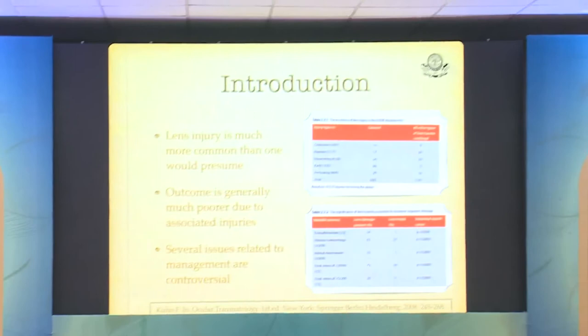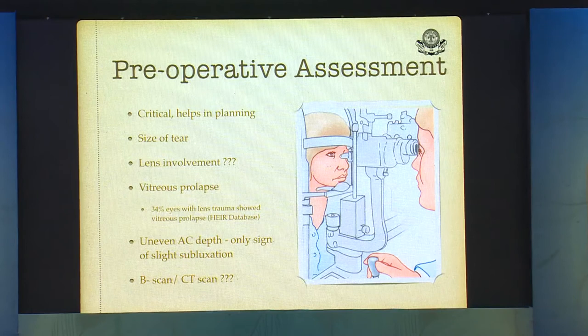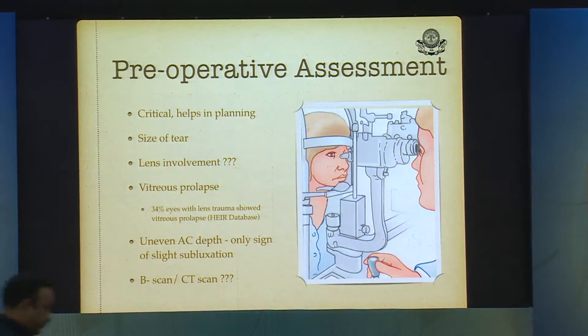The talk is on tackling the lens post open globe injuries. Lens injury is the most common form of injury associated with open globe traumas, and the outcome is generally much poorer due to associated injuries other than the trauma itself.